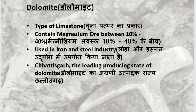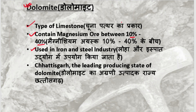Now we will learn about Dolomite. Dolomite is also a type of rock. Its speciality is that it contains a lot of magnesium — between 10% and 40% magnesium content. Compared to other stones, dolomite has more magnesium. It is mainly used in iron and steel industries. India's leading producing state of dolomite is the top producer.